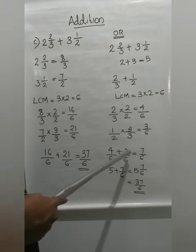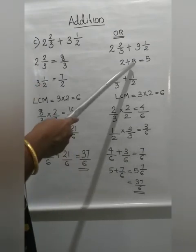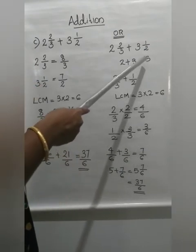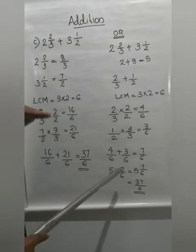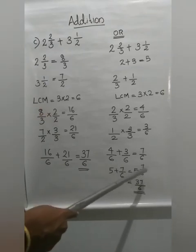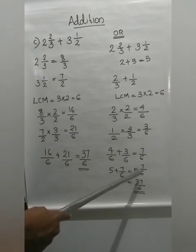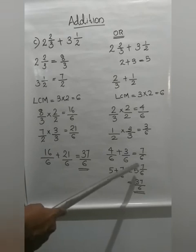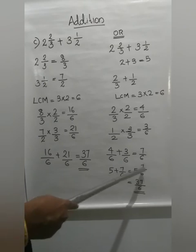So the fraction part gives 7 by 6, and the whole number part gave us 5. Now we add both parts: 5 plus 7 by 6. A whole number plus a fraction gives a mixed fraction: 5 and 7 by 6. Converting to improper fraction: 5 into 6 = 30, adding the numerator 30 plus 7 = 37. Denominator remains 6. So the answer is 37 by 6.